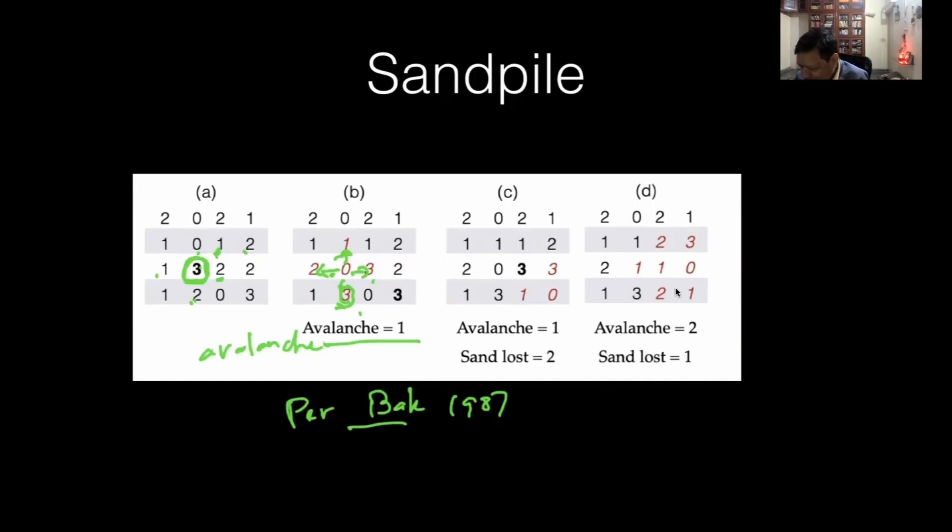If avalanche equals one, then stop and drop another sand. It happens to be dropped at this site, which has three. What does it do? It becomes four and it's going to distribute one each to its neighbors. So zero becomes one, this three becomes four, and one becomes two.